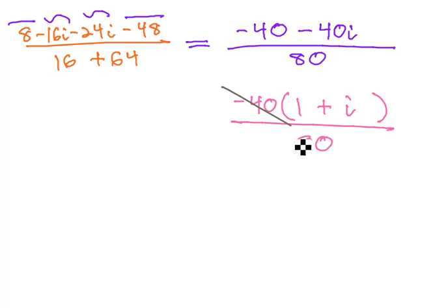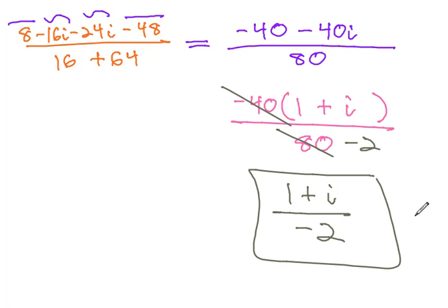And now we can reduce negative 40 over 80 as negative 2, and we get 1 plus i over negative 2 for our final solution.